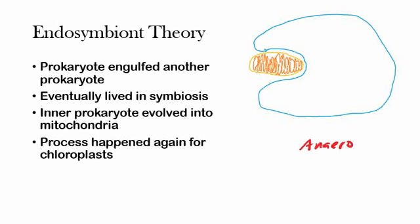There was this anaerobic prokaryote — that's the blue one — and it engulfed another prokaryote. I drew it very similar to a mitochondria. This other prokaryote was aerobic. So this large anaerobic prokaryote engulfed this smaller aerobic prokaryote. They're not really sure how it happened — whether it was eating it or whether the smaller one was a parasite living inside the larger one. But eventually they came to live in symbiosis, specifically mutualism, where the relationship was actually beneficial for both. The small aerobic bacteria was protected from harm, and the anaerobic bacteria could now use oxygen to its advantage instead of being poisoned by it. So they both benefited from this relationship.